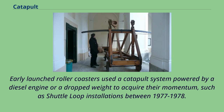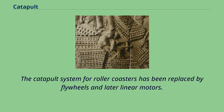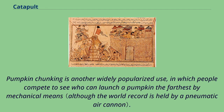Early launched roller coasters used a catapult system powered by a diesel engine or a dropped weight to acquire their momentum, such as shuttle loop installations between 1977 and 1978. The catapult system for roller coasters has been replaced by flywheels and later linear motors. Pumpkin chunking is another widely popularized use, in which people compete to see who can launch a pumpkin the farthest by mechanical means.